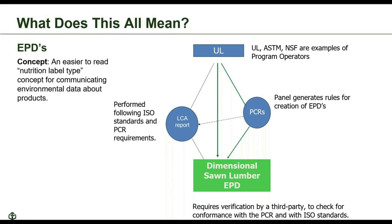Most people have probably heard of program operators — entities like Underwriters Laboratories, NSF International, SCS Global, and ASTM — which all certify, validate, and in some cases maintain thousands of standards related to quality, performance, and sustainability, while also acting as program operators for EPDs. Entities like ISO create and maintain standards that are internationally agreed upon by experts in their related fields. EPDs are promulgated by program operators who vet their EPDs before submitting them to a product category rule technical panel, and then they are subject to review by ISO standards and third-party review before receiving an environmental product declaration.